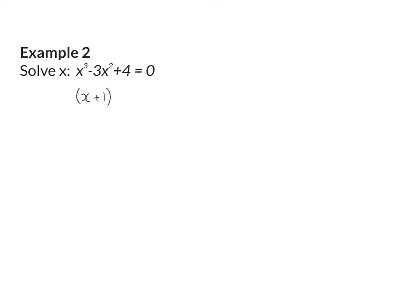Using inspection, we can say that the quadratic factor will be x squared minus 4x plus 4, and this will all be equal to zero.